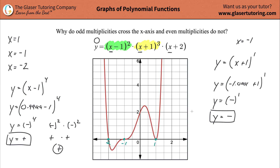So I was explaining why odd multiplicities are the way they are, and now why even multiplicities are the way they are as well — because the sign of the y value will never change when you have an even power up there. The sign is always basically going to become positive. That is not to say it's always going to be above the x-axis — what's inside will always be positive, but if you had a negative sign outside the parentheses, you'd always have a negative y value.